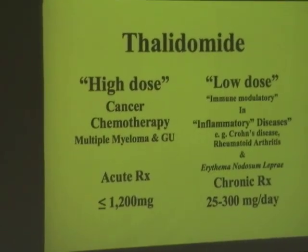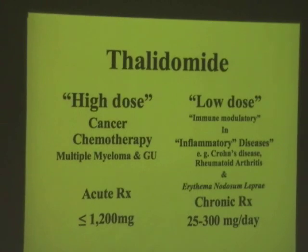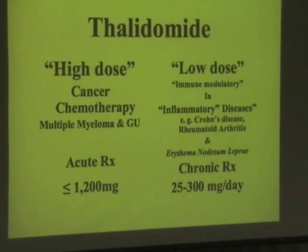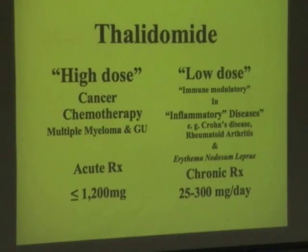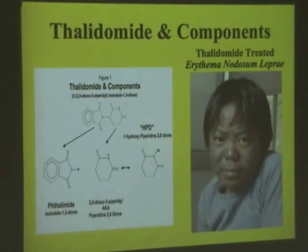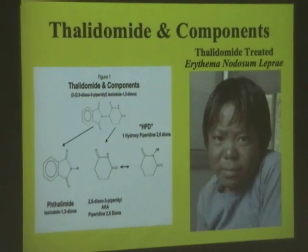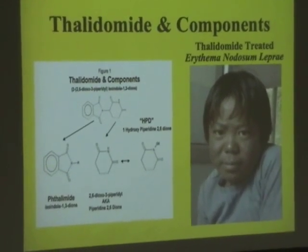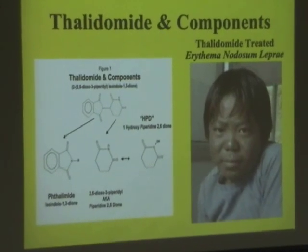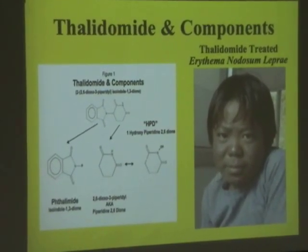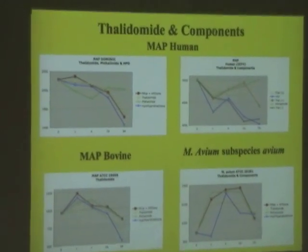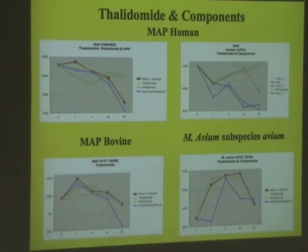Thalidomide is now being used again in clinical medicine because it works. In high doses it's used in cancer chemotherapy, and in low doses it's used to treat a variety of so-called inflammatory diseases, leprosy, and acknowledged mycobacterial disease. If you look at the molecule of thalidomide, you can see there are two moieties to it. We couldn't find any piperidine-2,6-dione, but we were able to purchase the last 15 mg available on the planet of hydroxypiperidine-2,6-dione from the rare chemical library at Aldrich. The two upper panels show the hydroxypiperidine results.